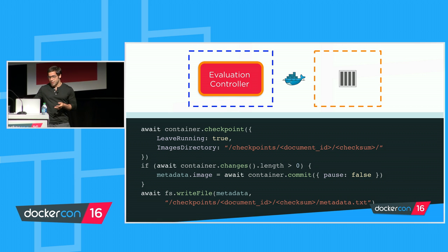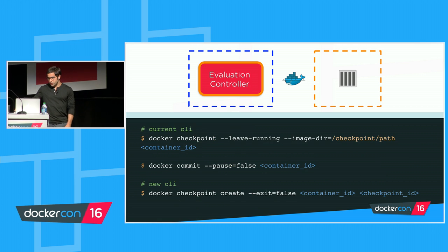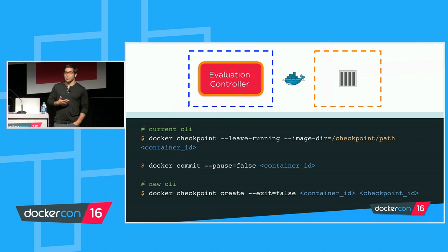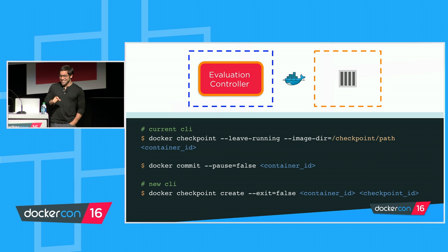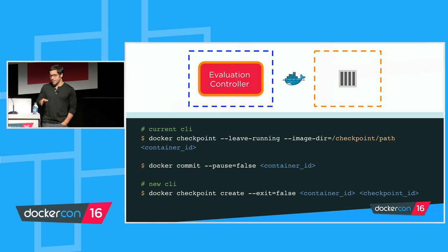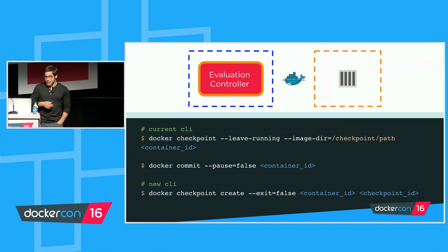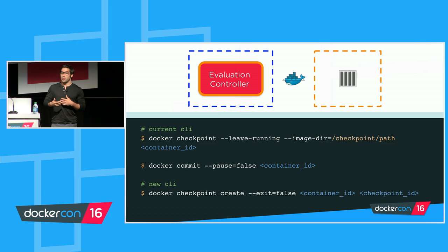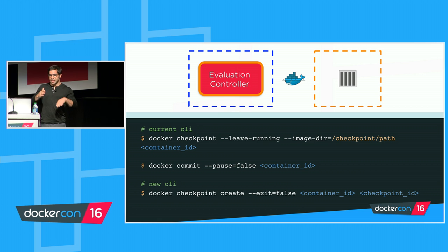We write some metadata about all that to disk. In terms of what the command line looks like: the version we're running calls checkpoint and then docker commit. In the new version, checkpoint is a Docker subcommand — there'll be checkpoint create, checkpoint ls to list, and you can delete checkpoints. So there's a whole new interface coming.